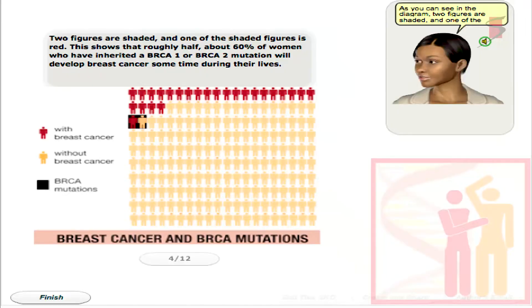This slide from that intervention shows the base rate of breast cancer — about 25 out of 200. The folks with a mutation represent a different denominator. It's a way to flip the denominators in people's minds so they understand that breast cancer given mutation is a different probability than mutation given breast cancer.